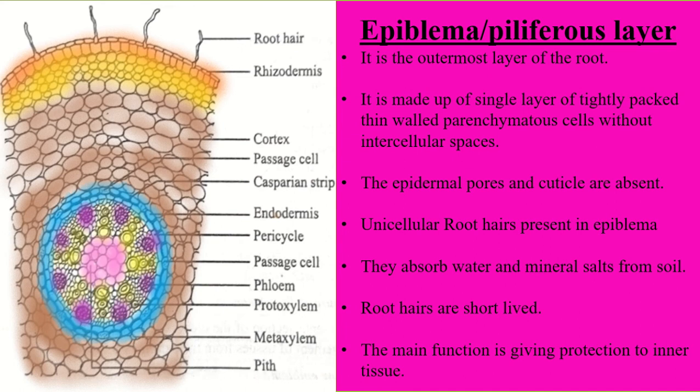Epidermal pores and cuticle — like stomata and cuticle found in the stem — are completely absent in the roots, that is in the rhizodermis. Root hairs are present here, which are unicellular. These root hairs help to absorb water and mineral salts from the soil and are short-lived. The main function of the rhizodermis is to give protection to the inner tissues like cortex, vascular bundle, and pith region.